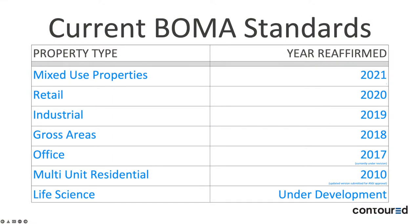Currently there are six standards, listed by the year they were most recently affirmed. Mixed-use properties was just approved by ANSI within the last three weeks. The retail standard was approved at the end of last year, and industrial, gross, and office standards are also current. The multi-unit residential and office standards are being reaffirmed. There is also a life science standard that will likely become an appendage to the office or industrial standard rather than its own standalone standard.